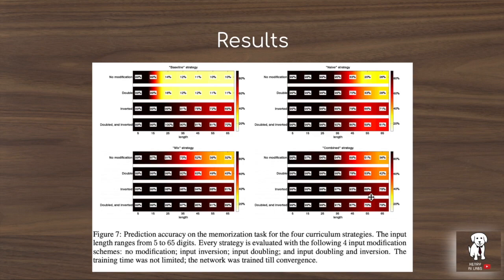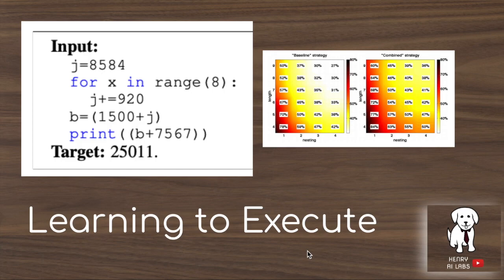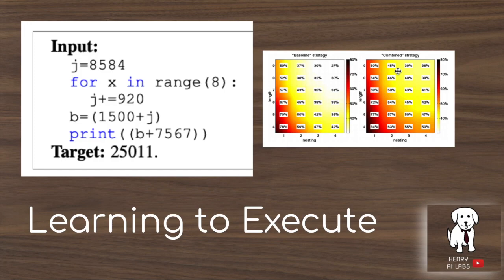Thanks for watching this video explaining 'Learning to Execute' — a fascinating sequence-to-sequence encoder-decoder problem of predicting the outputs of Python programs using neural networks without actually running the code. The discussion of curriculum learning is particularly interesting, showing the benefit of the combined strategy: sampling from both a progressively growing schedule of increasingly difficult samples and a random mix of easy-to-hard samples. Thanks for watching and please subscribe to Henry AI Labs for more deep learning and AI videos.